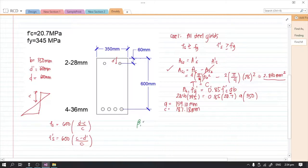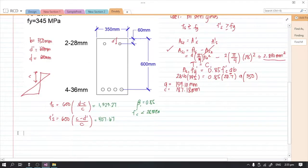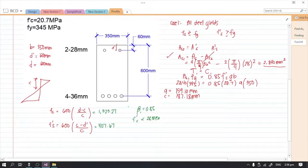To get the value of c we are going to divide a by beta 1. So our beta 1 is equivalent to 0.85 since f'c is less than 28 MPa. Therefore we got the value of c, so we can now solve for the actual value of fs. The value of fs is 1323.27 MPa and for the actual stress for the compression reinforcement, that is 407.67 MPa. So if we check this, both are greater than fy, therefore our assumption is correct.